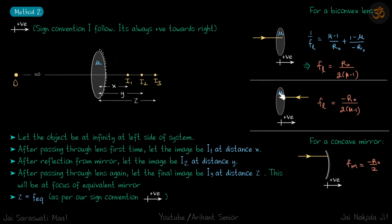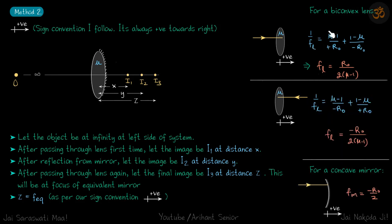Let's quickly see how these lenses behave in my sign convention. For a biconvex lens with refractive index mu, taking the right side as positive: 1/f_L = (mu − 1)/r0 + (1 − mu)/(−r0). If you have any doubt about how we use this formula, you can watch the previous problem where we explained how to calculate focal length for a system of lenses. For a single lens we just apply this formula and get the focal length.